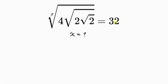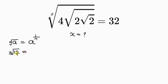Our first step will be to apply the property of indices to what we have on the left. The property says that when I have the n-th root of a number a, this is equal to a raised to the inverse of n. For example, the cube root of 12 is equal to 12 raised to the power of 1 over 3.